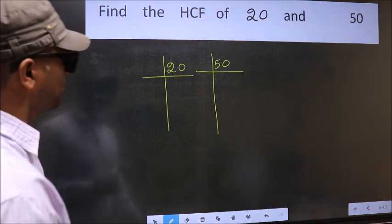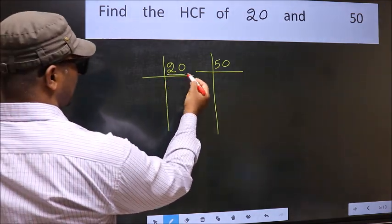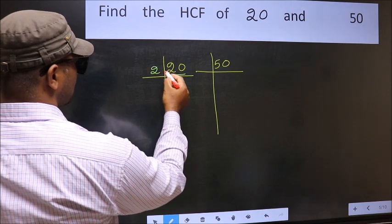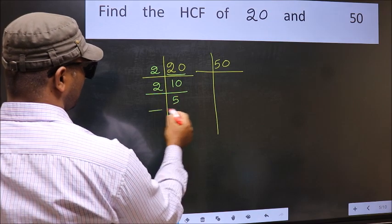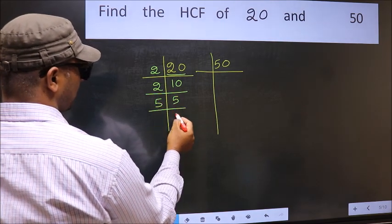Next, here we have 20. 20 is 2 tens. Now 10 is 2 fives. 5 is a prime number, so 5 once.